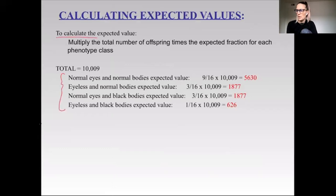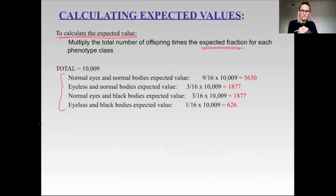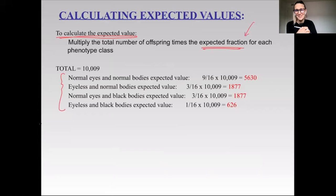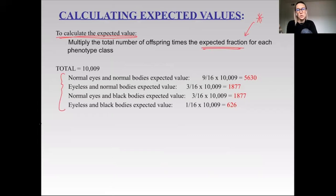To calculate the expected value, you multiply the total number of offspring by the expected fraction. The reason students usually have problems with this on an exam is that they don't get their expected fraction right — they didn't do the original Punnett square correctly. So it's really critical that you understand the genetics before you start calculating your expected fractions.